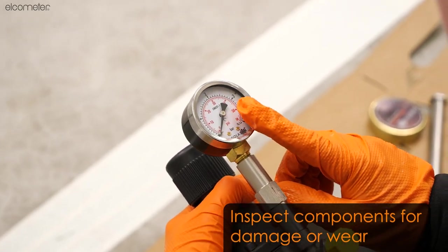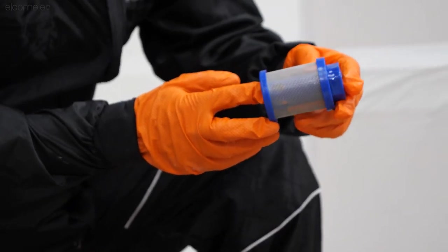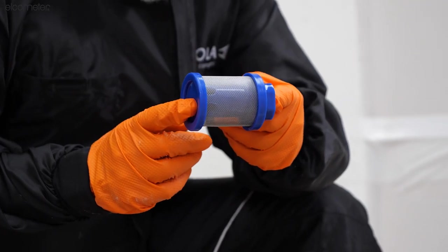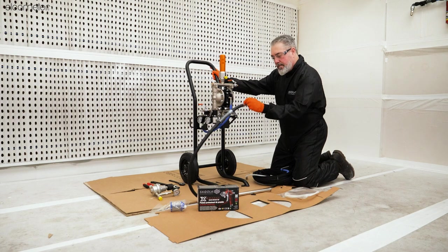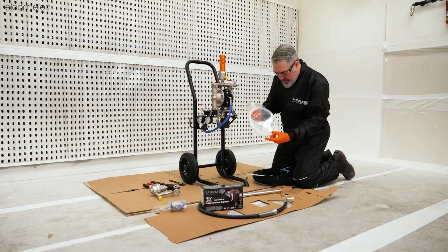Now it's time to inspect each individual component for damage or wear. Pay close attention to the cage on the product filter, making sure not to hold it by the mesh. Look closely at the fittings on the product intake hose and the recirculation tube, ensuring they are clear from debris.